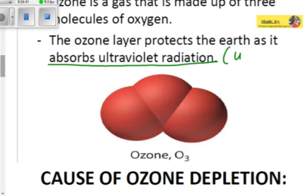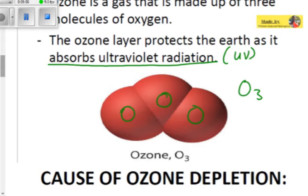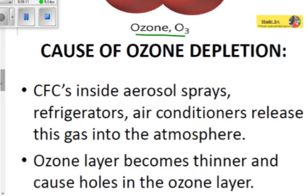The ozone layer protects the earth as it absorbs ultraviolet radiation. The three oxygen molecules are able to absorb the incoming UV rays released by the sun. You can see the molecule of ozone has one, two, and three oxygen atoms — this is the compound of three oxygens, which is basically ozone, and this is what is contained within the ozone layer.